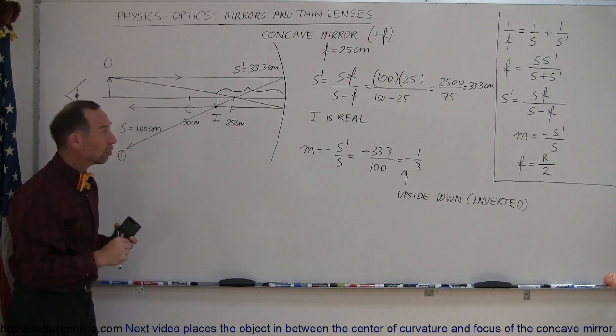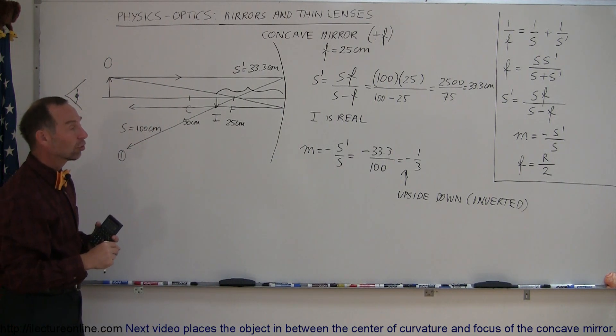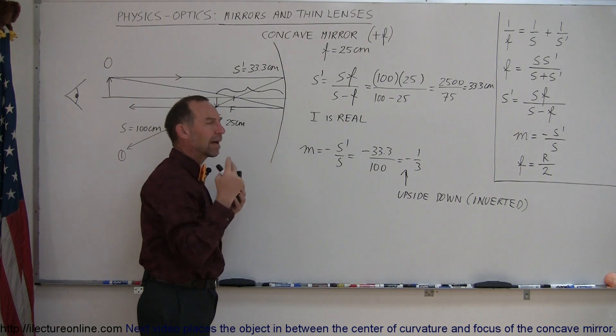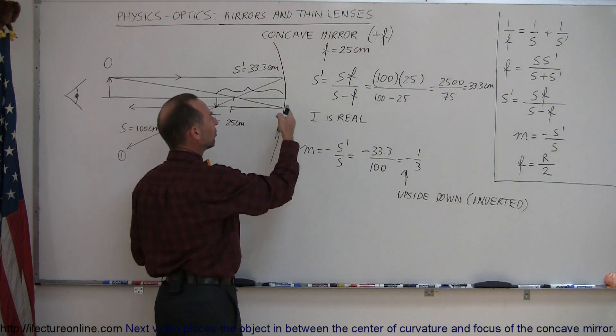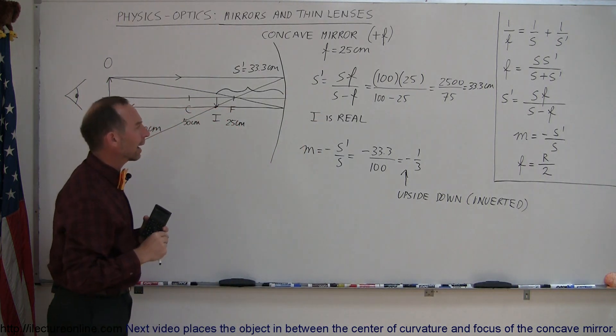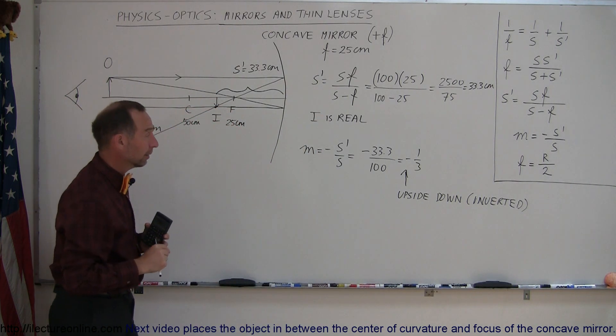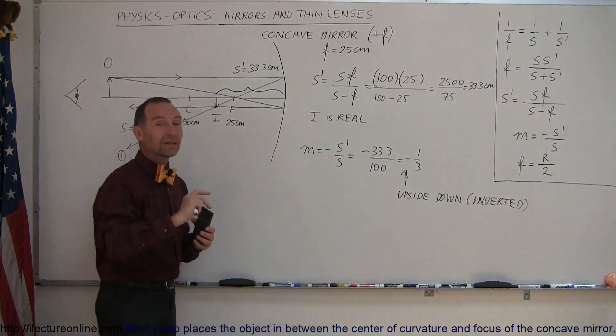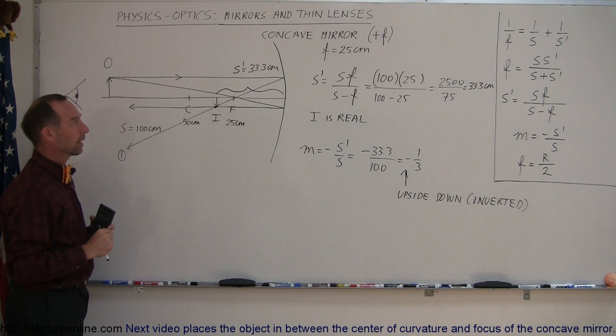So that is how you find the image, the location of the image, whether or not the image is real or virtual. Virtual means that it's imaginary. The brain kind of sees it through finding the rays appearing to combine behind the mirror. We'll see some examples of that later. The magnification, one-third. And the fact that it's negative means that it's upside down or inverted.